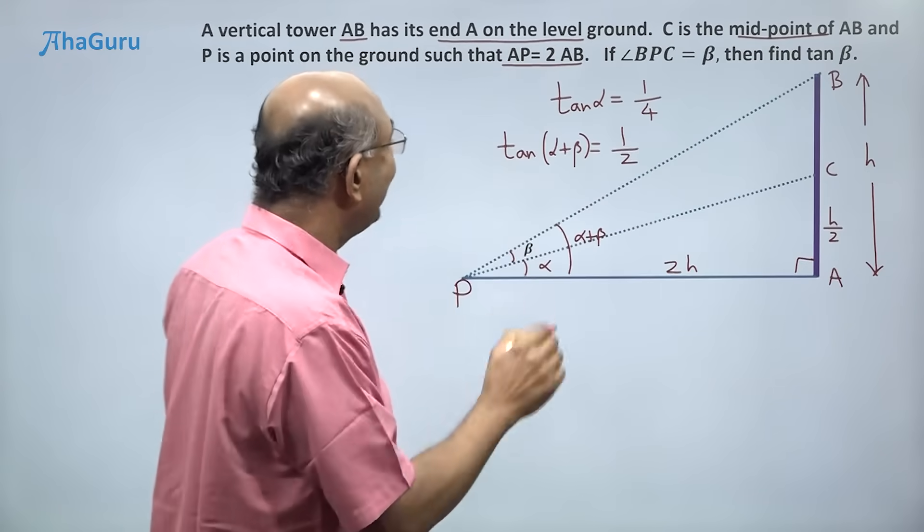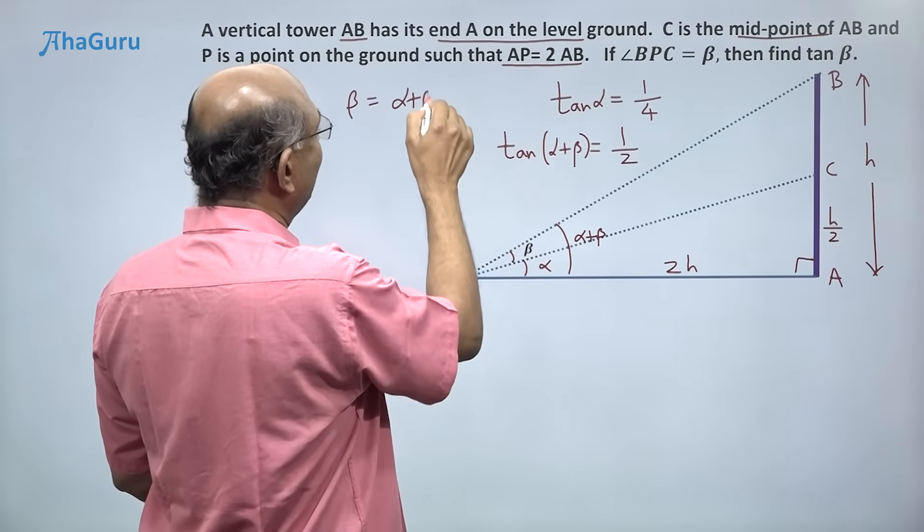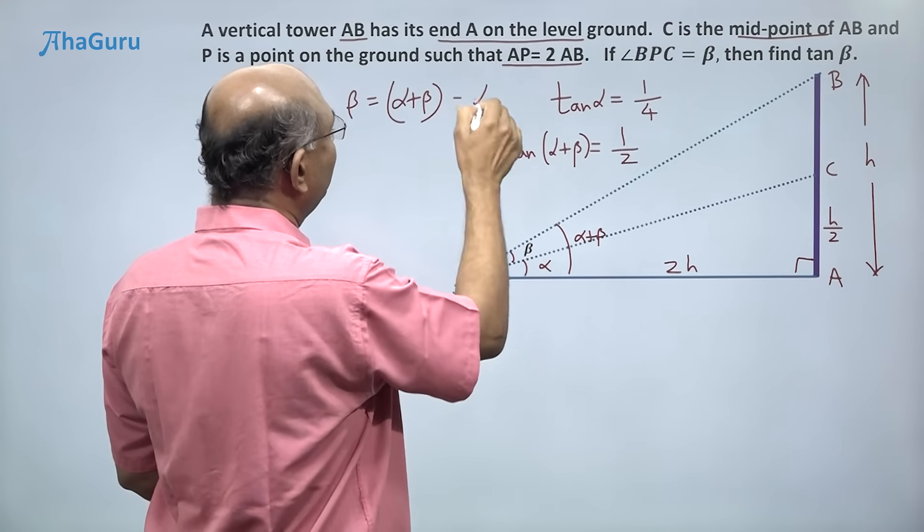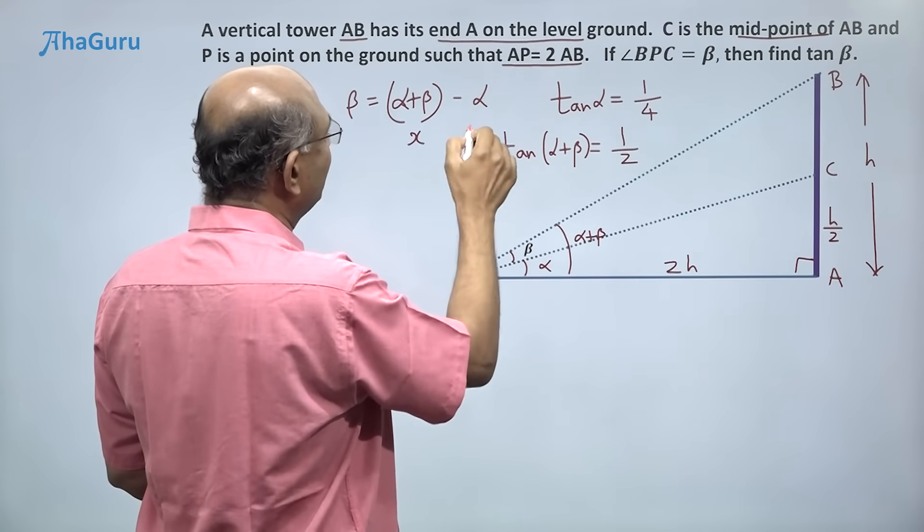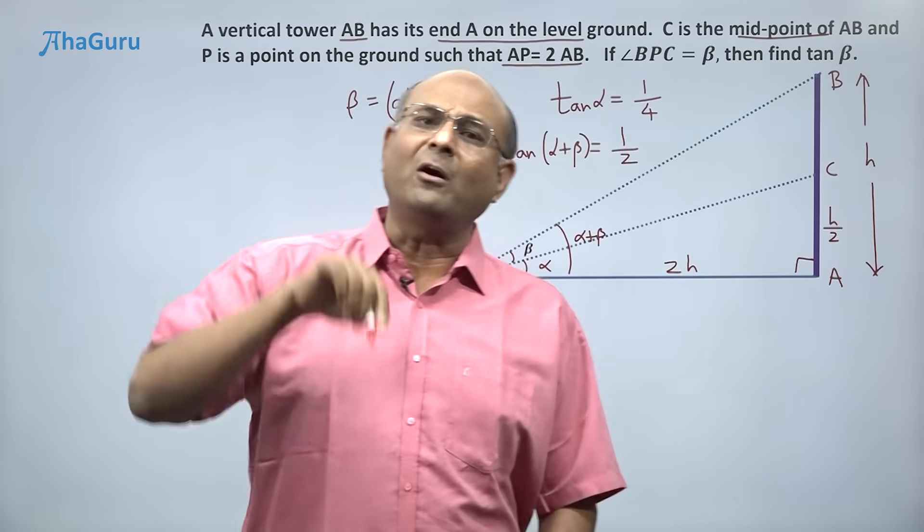But beta is just (alpha + beta) minus alpha, right? If I think of this as x and think of that as y, basically it is x minus y.